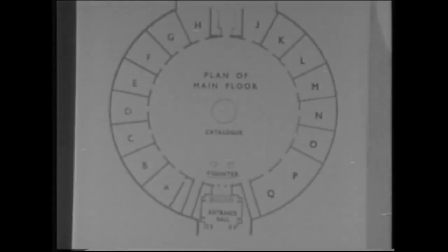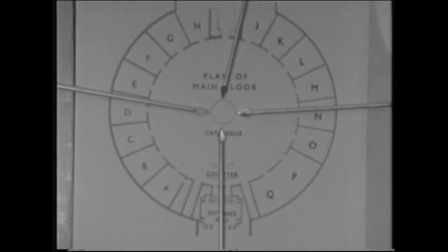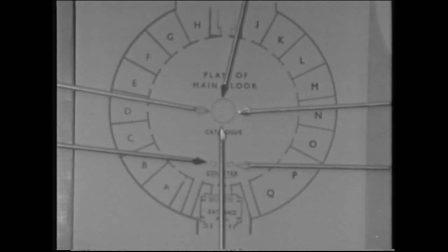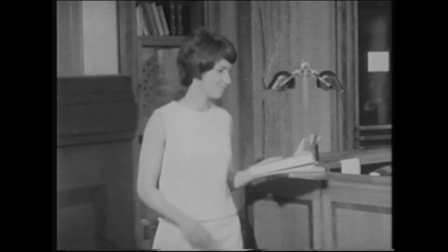If you wish to take this book out of the library, you should fill in a borrower's form. Supplies of these will be found at four points around the central catalogue and in receptacles on both sides of the counter. The borrower's form should be filled in carefully and preferably with a ballpoint pen so that the impression goes through to the second leaf of the form.